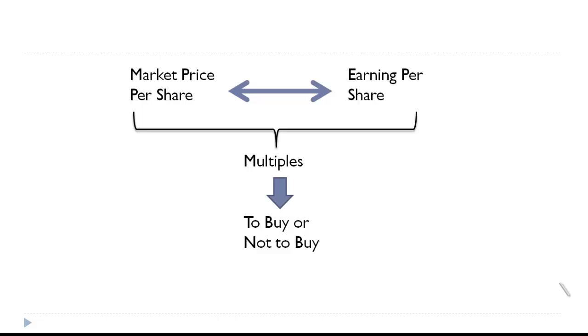When a share has the capacity to earn only 10 but is traded at 20, it could be for various reasons. The price-earnings ratio, or P/E ratio, is calculated as market price per share divided by earnings per share.